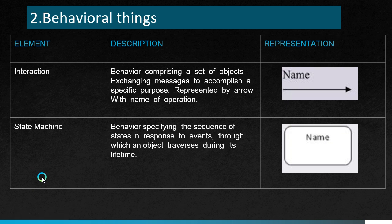Under behavioral things, the first element is interaction — behavior comprising a set of objects exchanging messages to accomplish a specific purpose. It is represented by an arrow with the name of the operation on top. The next element is state machine — behavior specifying the sequence of states in response to events through which an object traverses during its lifetime.